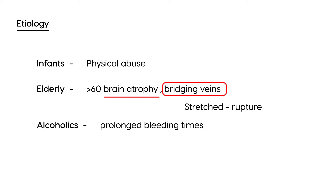There's one other category: people on any kind of anticoagulation treatment — for example, patients on warfarin. People on this type of treatment can have bleeds, and that's a very important thing to watch out for.